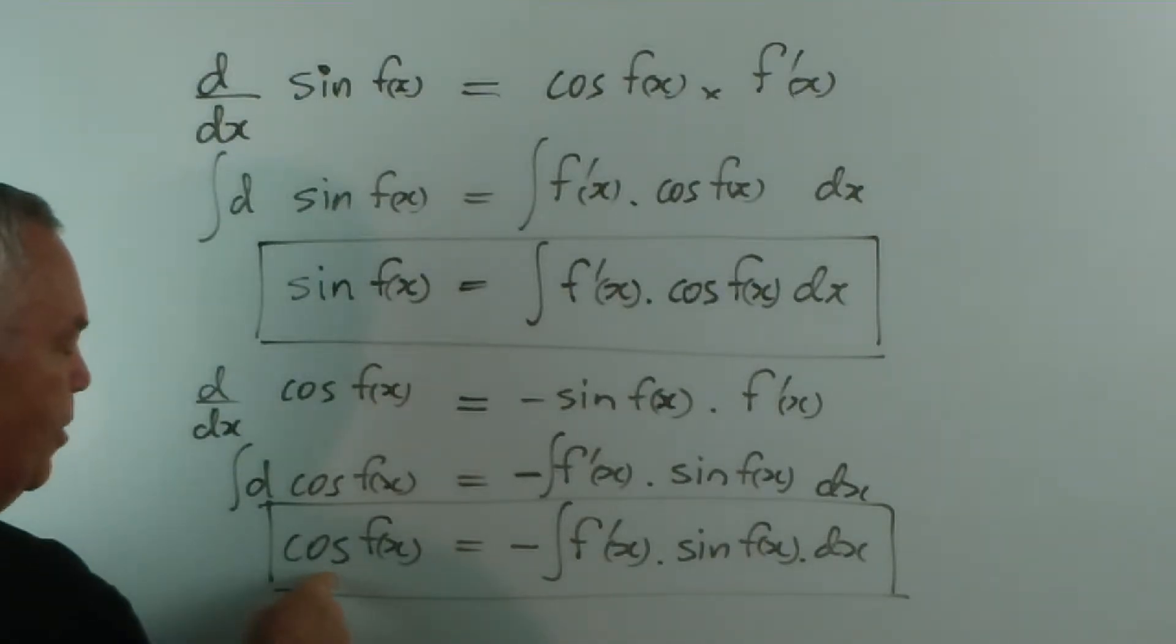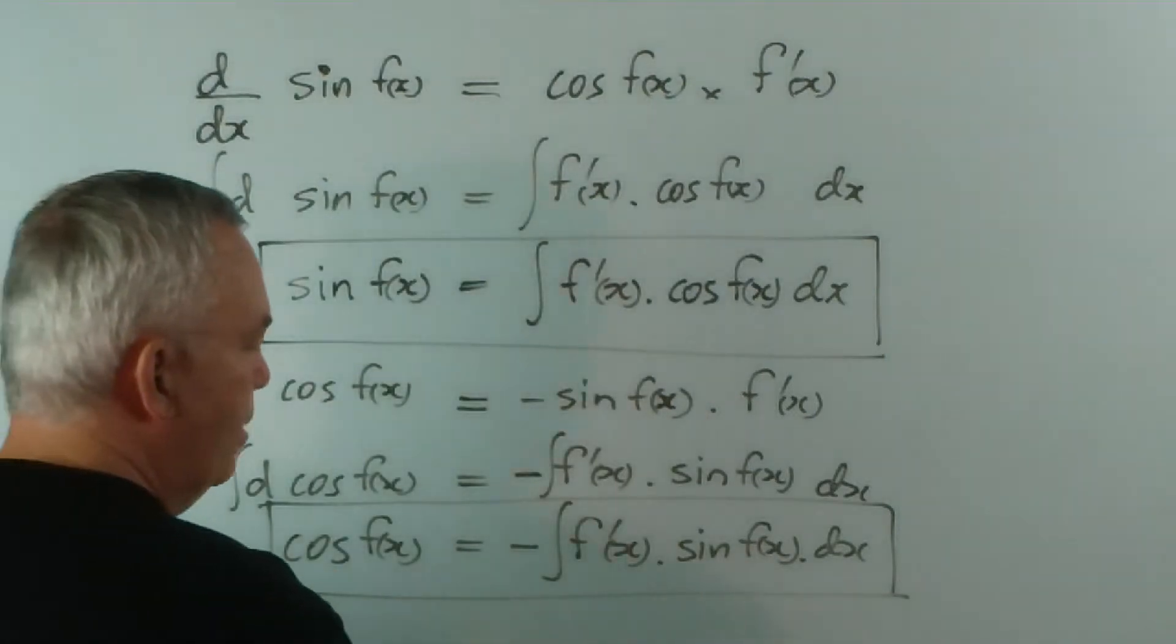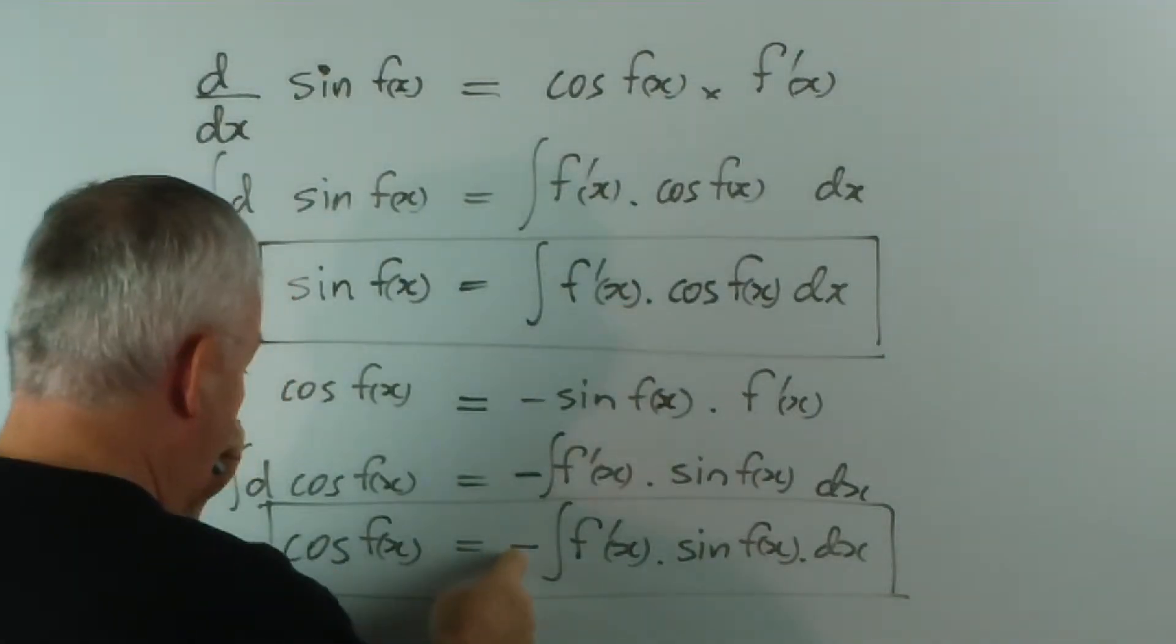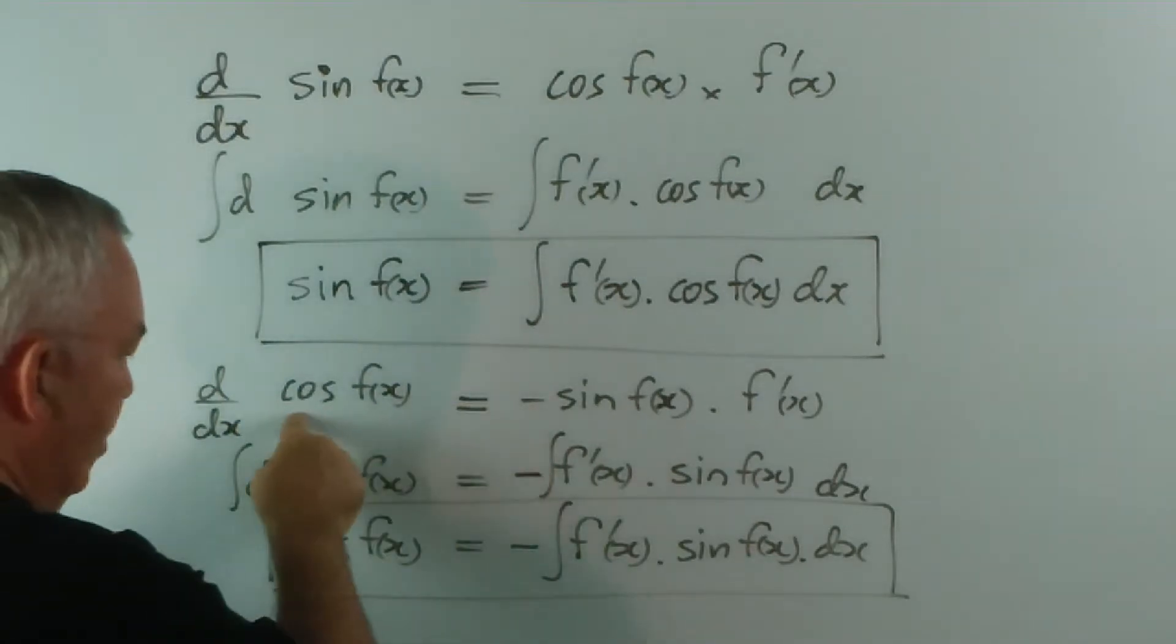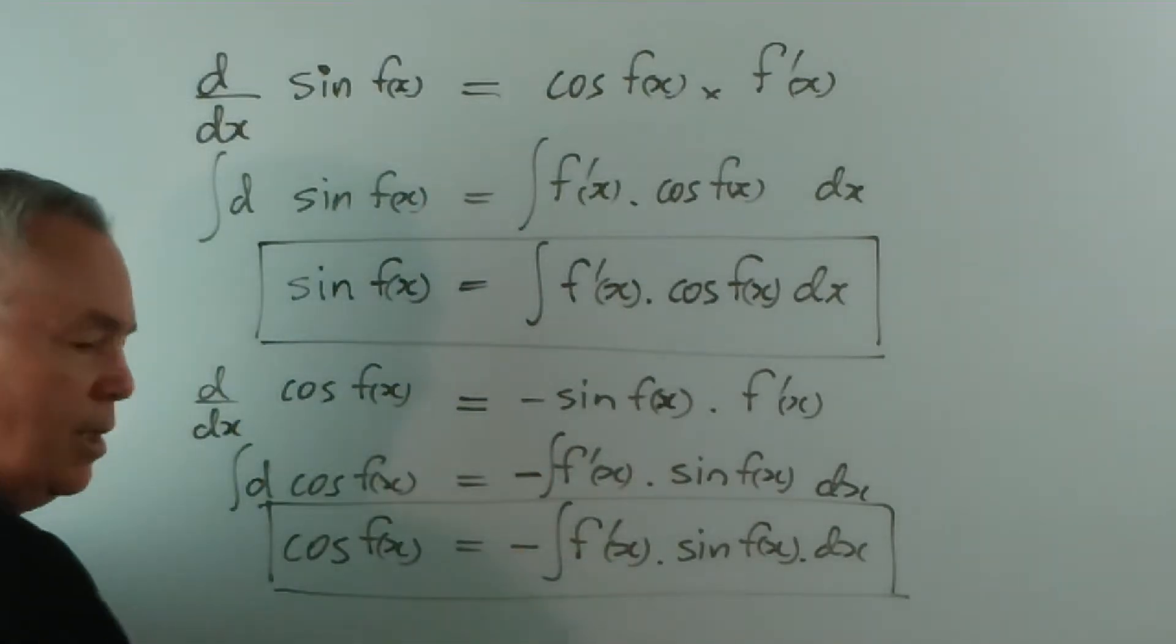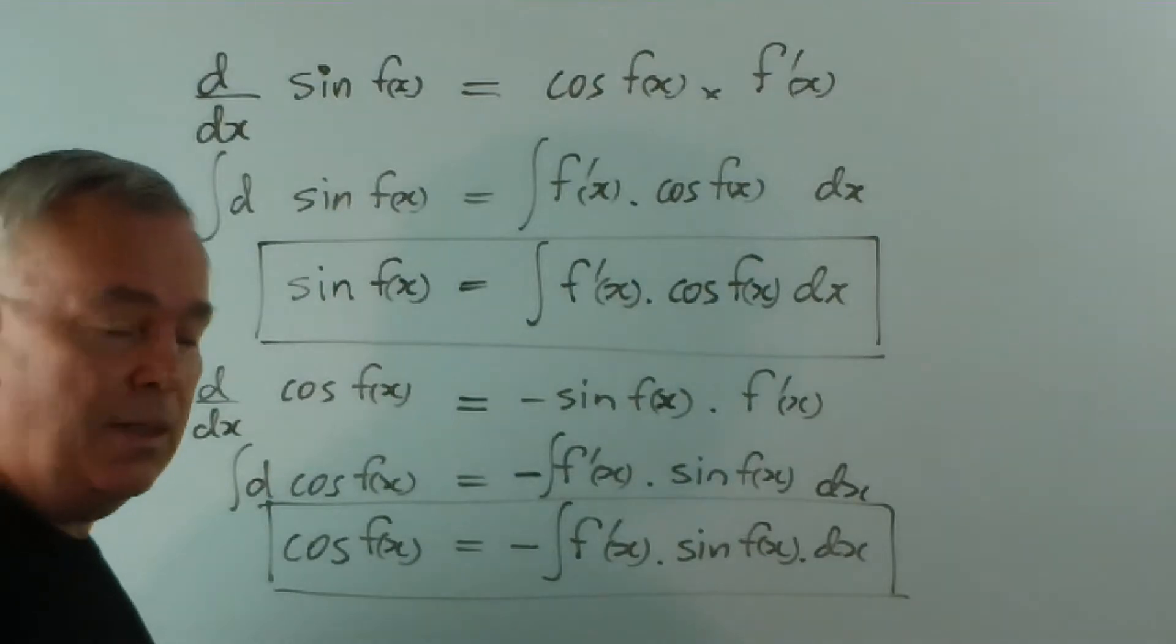So notice, because the derivative of the cos is minus sine, we're going to have a minus sign here, because that minus appeared when we took the derivative. It's going to be there as part of our pattern in the integral.